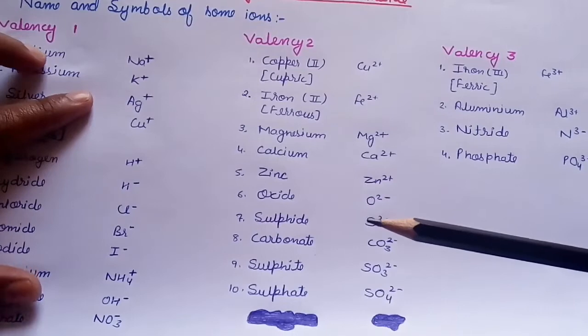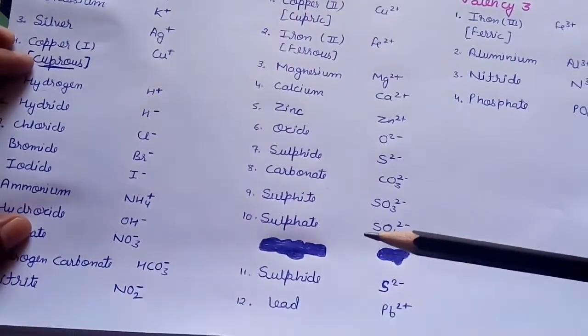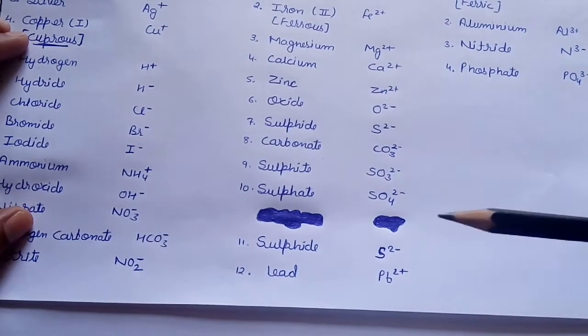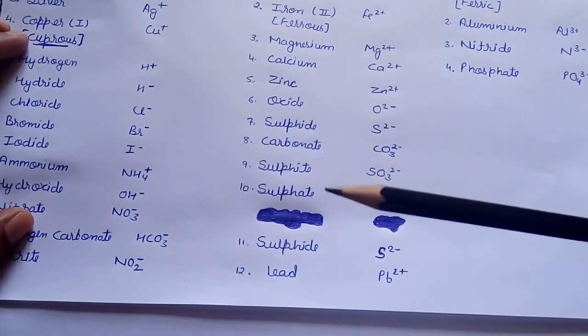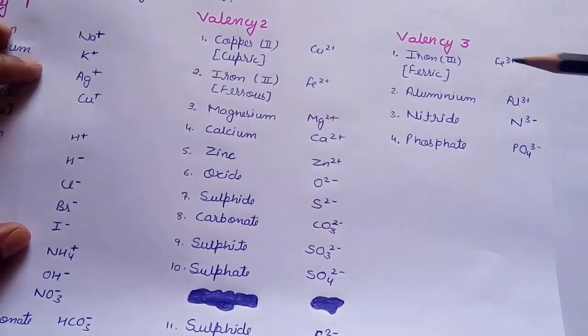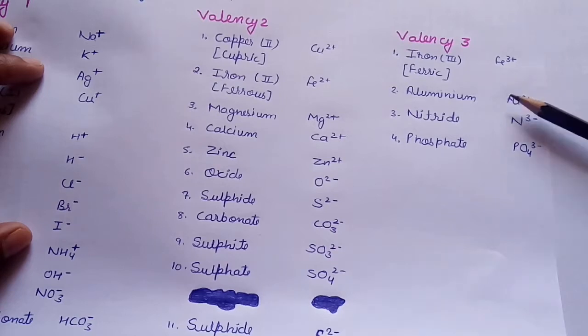Magnesium, calcium, zinc, oxide, sulfite, carbonate, sulfate, lead. You must not be confused between sulfite, sulfate and sulfide. Now, I am sharing a few of plus 3 oxidation state plus 3 valency ions. Iron, aluminium, nitride, phosphate.